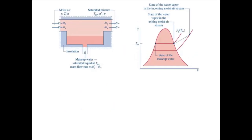What we want to start with is looking at a very practical way that we can find the humidity ratio in terms of pressure — working with moisture pressure, temperature, and this adiabatic saturation temperature which we'll come back to. We're going to use what's called an adiabatic saturator. Moist air comes in, makeup water sits at the bottom, and as the moist air moves across the makeup water it picks up more vapor until it exits completely saturated.